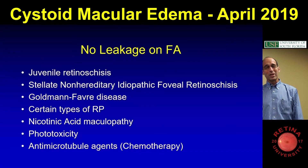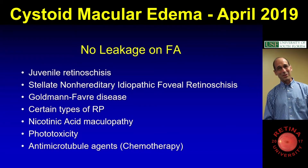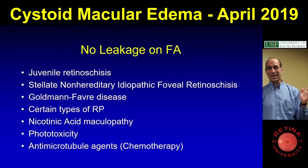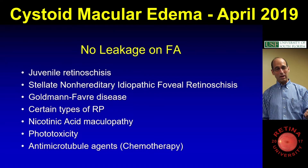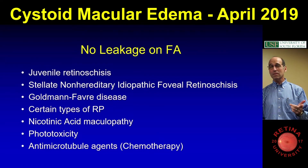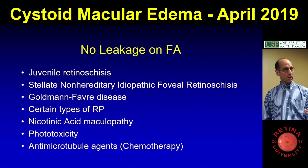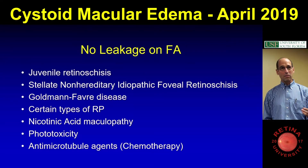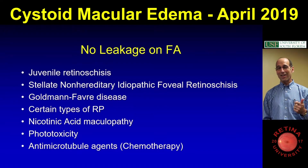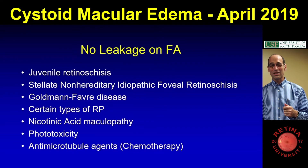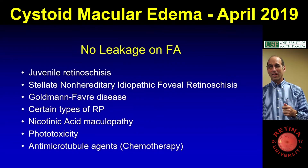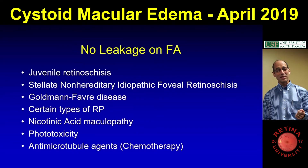And so no leakage on FA — if you're going to remember anything, the main ones are juvenile retinoschisis. Last month we showed the case of retinoschisis in an older guy. There is a name for that: it's called Steli non-hereditary idiopathic foveal retinoschisis, or SNIFR. So that's another diagnosis with a paper on it.